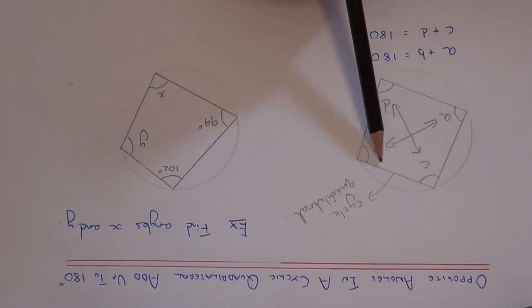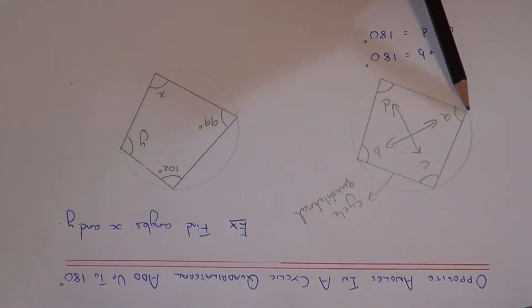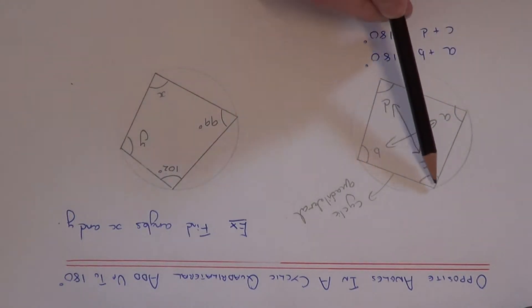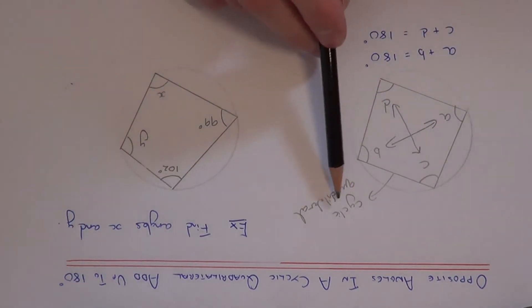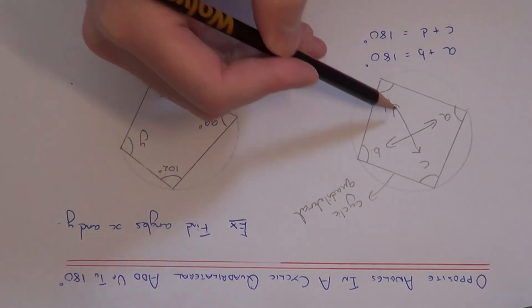A cyclic quadrilateral is a four-sided shape where all the four corners are on the circumference of the circle. And what's special about a cyclic quadrilateral is the angles which are opposite each other add up to 180 degrees.